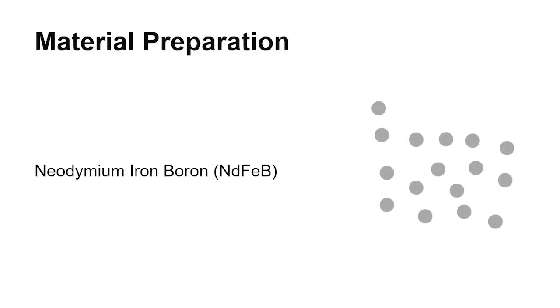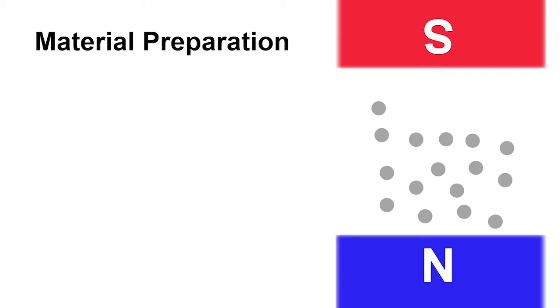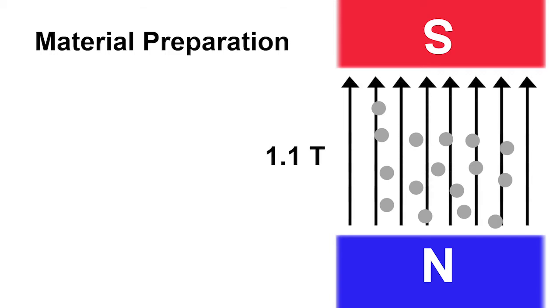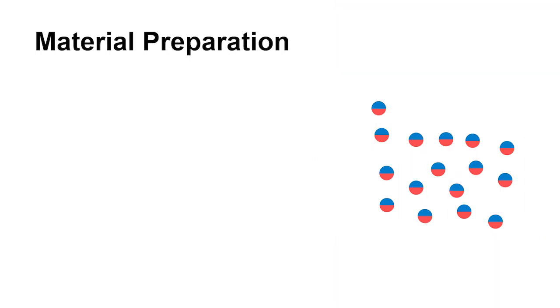Material preparation: These are neodymium-iron-boron magnetic particles that have an average diameter of 5 micrometers. We put the particles between two one-inch permanent magnets, and the atomic dipoles align themselves with the magnetic field. Even when the field is removed, part of the magnetization will be retained because of magnetic hysteresis.